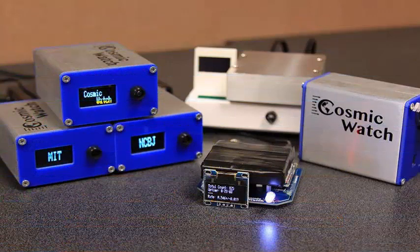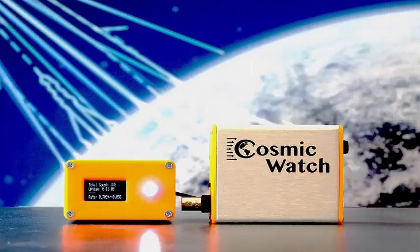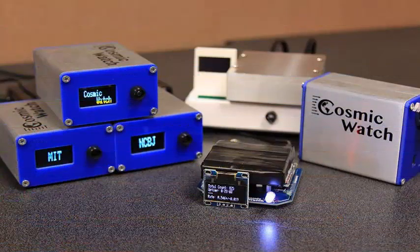But thanks to an MIT team you can now build your own detector for 100 US dollars which is small enough to take on a plane or the subway. Forged in the crucible of supernovas and other astronomical events, cosmic rays rush through the universe until they collide with something.